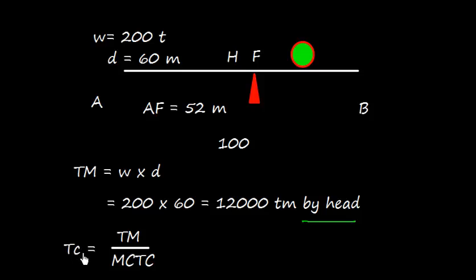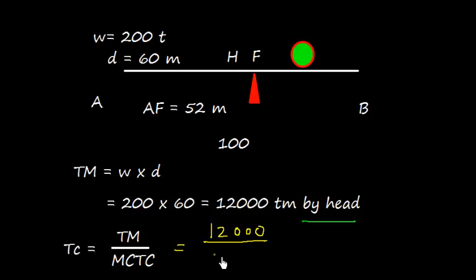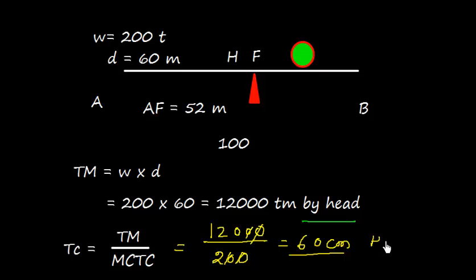We know that the trim cost TC can be calculated as trimming moment divided by MCTC, where MCTC is the moment to change trim by 1 centimetre. In this scenario, the trimming moment is 12,000 and the MCTC is 200, so the trim cost is 60 centimetres by the head.